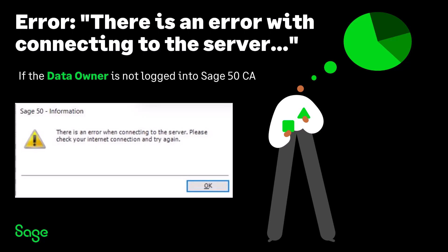The solution to this issue is to change the Sage account that's logged into Sage 50 to the data owner's Sage account. That way, the security check for the data owner can proceed correctly. There are a couple of ways to change the Sage account that's logged into Sage 50, and in this video, we'll show you the simplest.